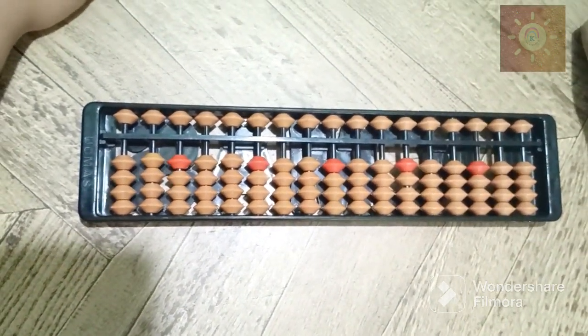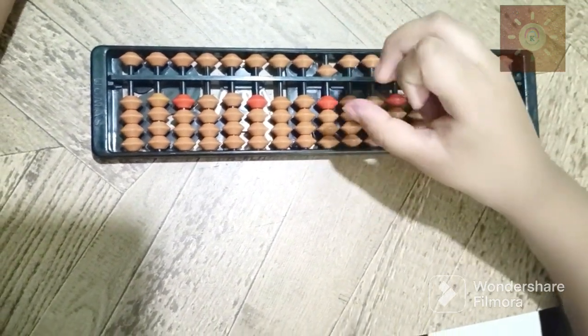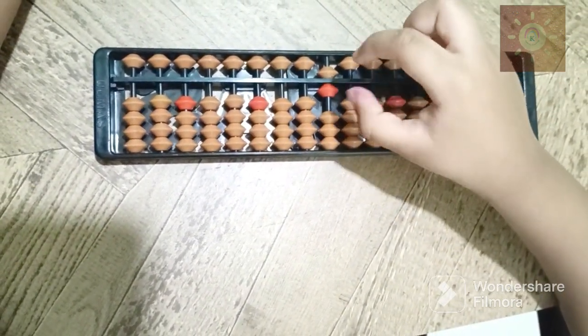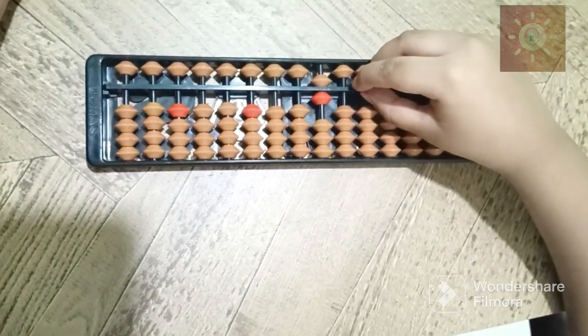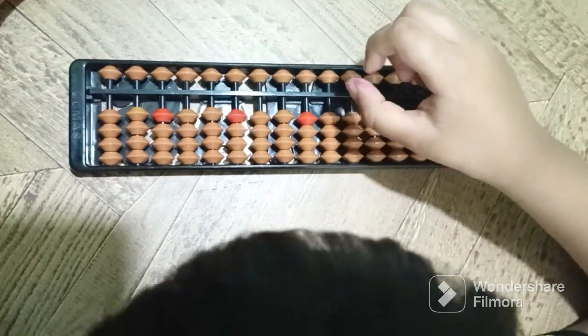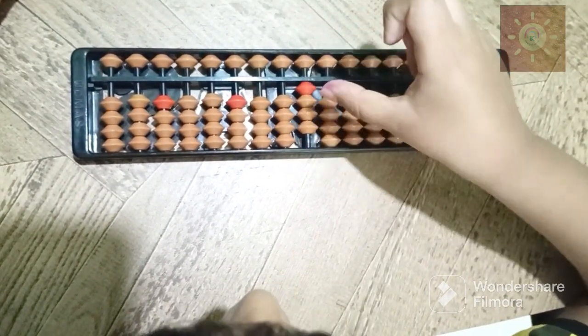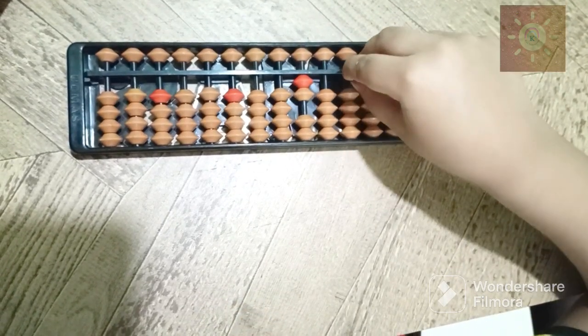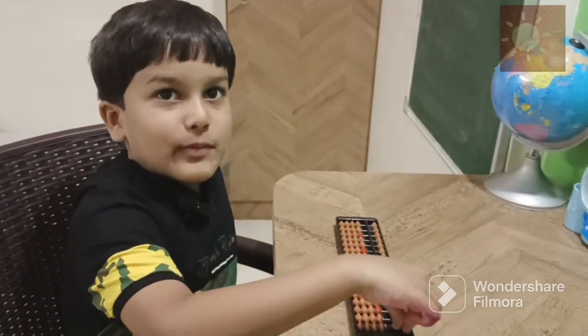Now, the subtraction. First, five minus one equals four. Good. Three minus two equals one. Are you ready? Yes, ready.